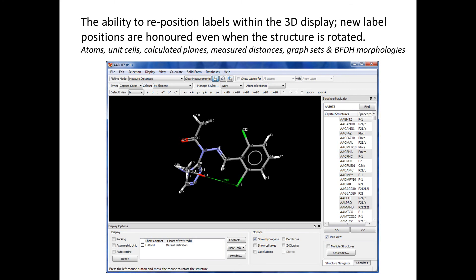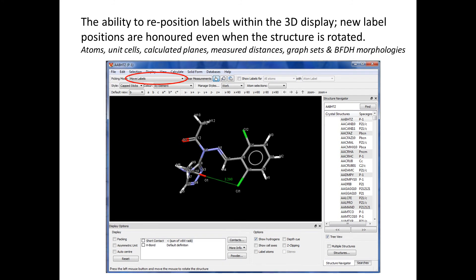Another feature is the ability to reposition labels within the 3D display. These new label positions are honored even when the structure is rotated. If you click here and obtain the menu move labels, you can now individually move all of the labels. You can move the following labels: atoms, unit cells, calculated planes, measured distances, graph sets, and BFDH morphologies.